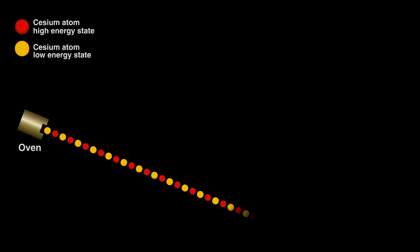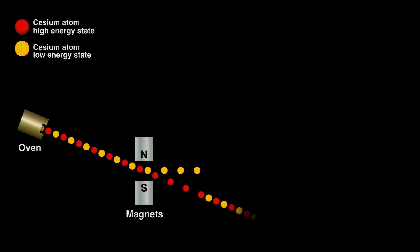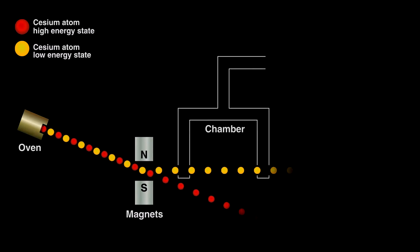In an oven we heat cesium chloride to create a gaseous stream of cesium ions. The stream contains both the low and high energy ions. We first flow it through a magnet, separating the two types, discarding the high energy ones, allowing the lower energy ions to pass into a chamber.